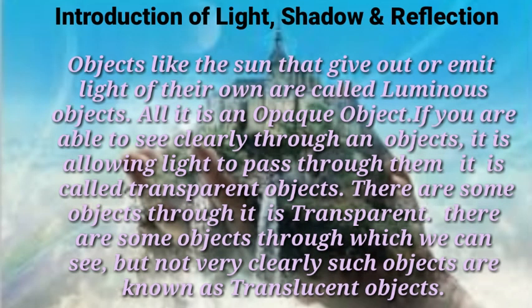Introduction of light, shadow and reflection. Objects like the sun that give out or emit light of their own are called luminous objects. If you are able to see clearly through an object, it is allowing light to pass through them. It is called transparent objects.